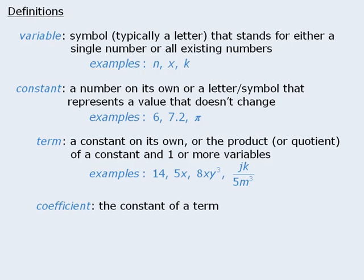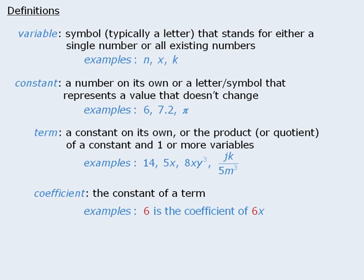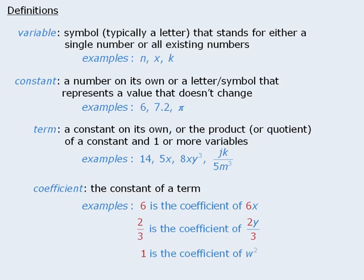A coefficient is the constant portion of a term. For example, 6 is the coefficient of 6x, and 2/3 is the coefficient of 2y over 3. Now if a term does not appear to have a coefficient, then that coefficient is assumed to be 1. So for example, the coefficient of w squared is assumed to be 1.